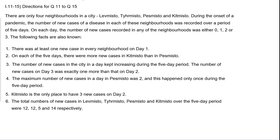There are only four neighbourhoods in a city — let's call them L, T, P and K. During the onset of a pandemic, the number of new cases of a disease in each neighbourhood was recorded over a period of five days. On each day, the number of new cases recorded in any neighbourhood was either 0, 1, 2 or 3. Along with this, the following facts are told.